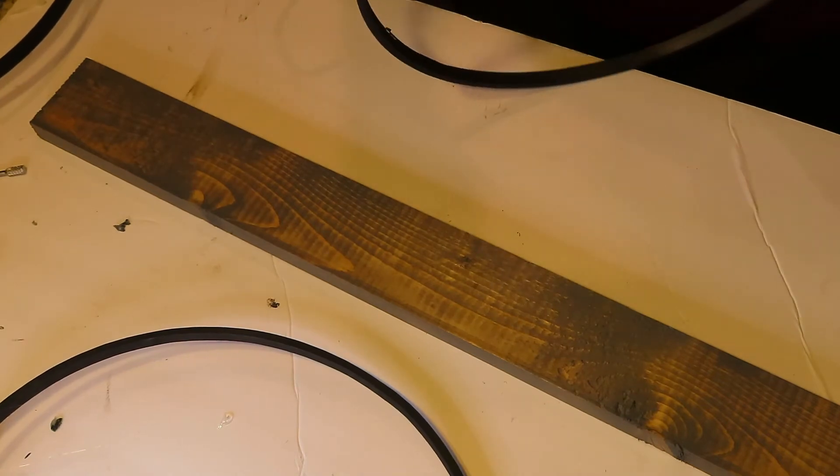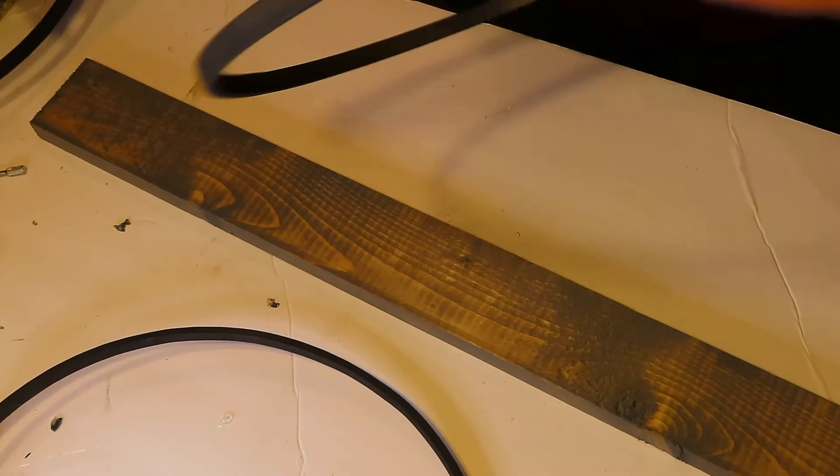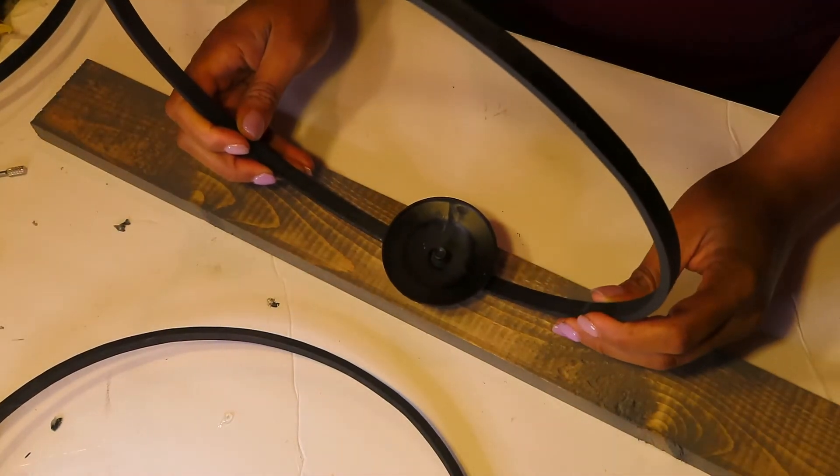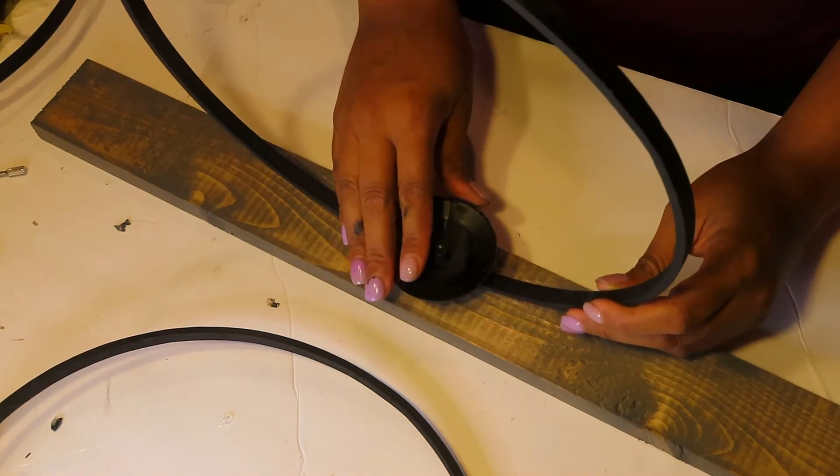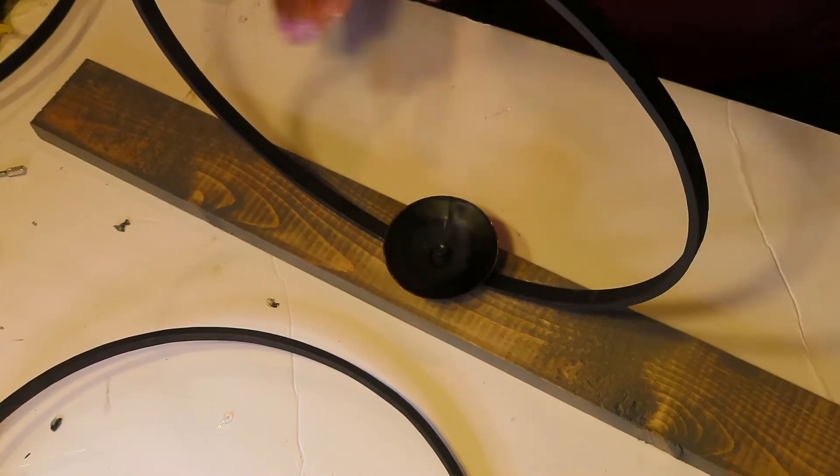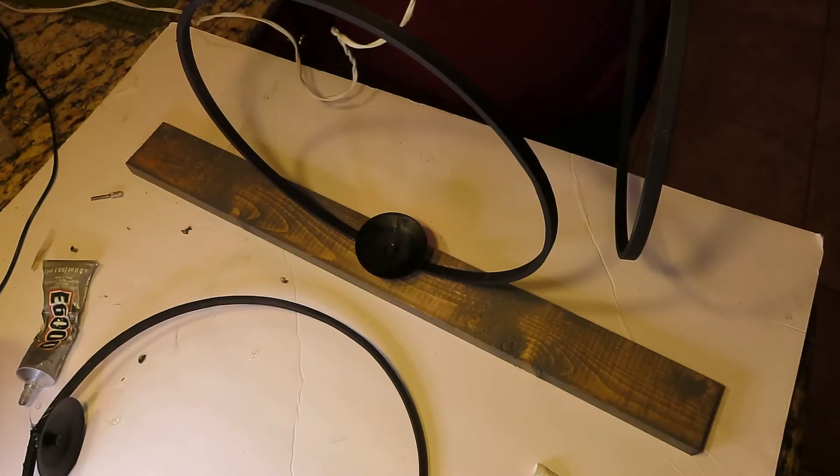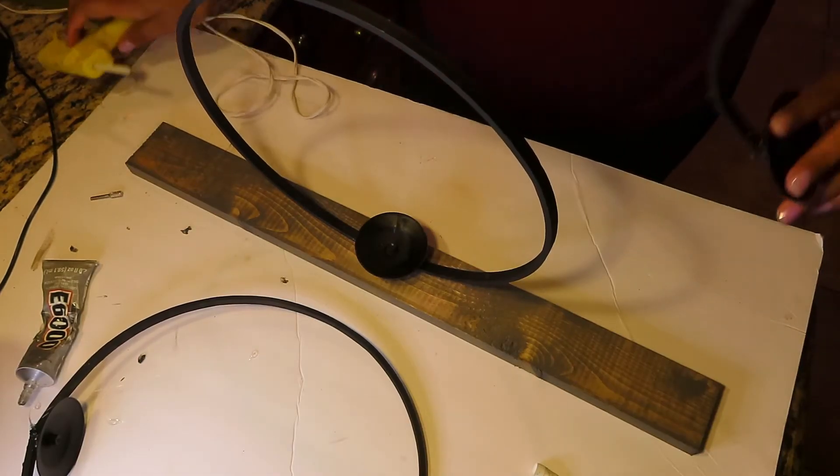After it dried, I brought it back in so that I can begin to glue it to the wooden slab. I took some hot glue with the hot glue gun and placed it on the bottom of the hoop and glued it to the slab.